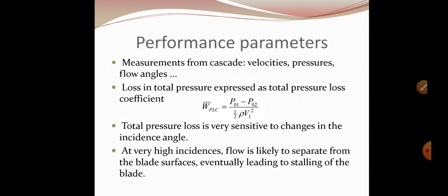Performance parameters: measurements from cascade are velocities, pressures, flow angles. Losses in total pressure can be expressed as total pressure loss coefficient WPLC, given as p01 minus p02 by half rho 1 v infinity v1 square. Total pressure loss is very sensitive to change in the incidence angle. At very high incidence, flow is likely to separate from the blade surface, eventually leading to stalling of the blades.